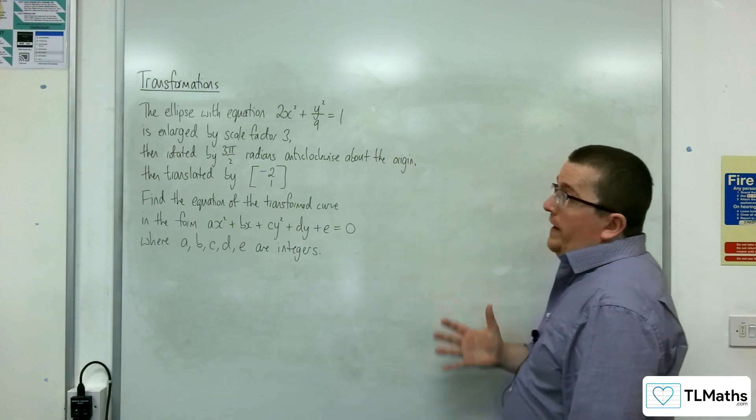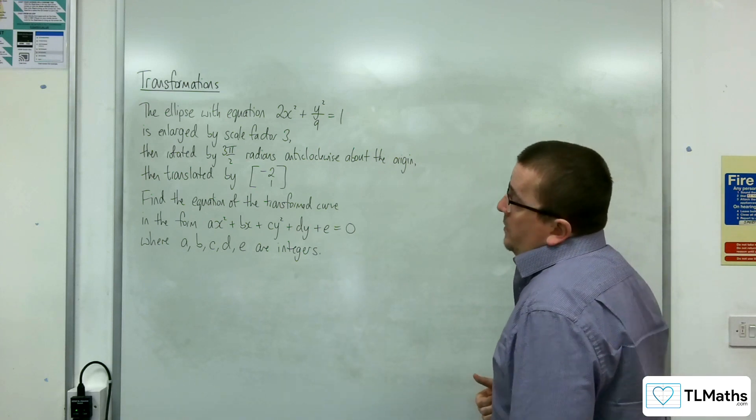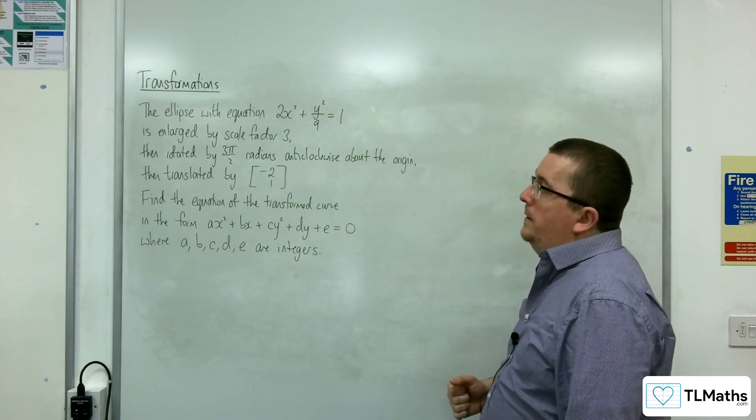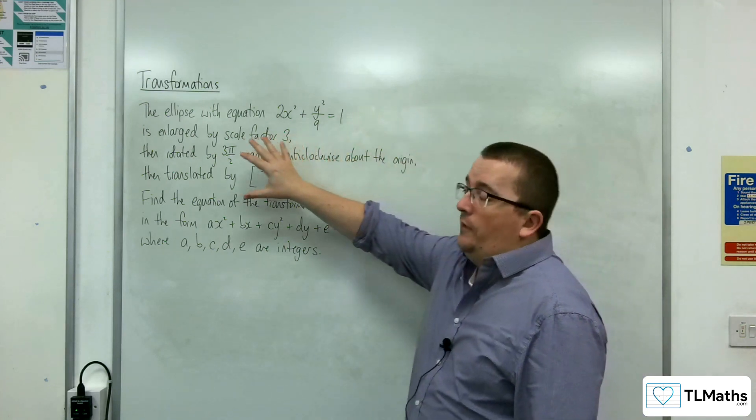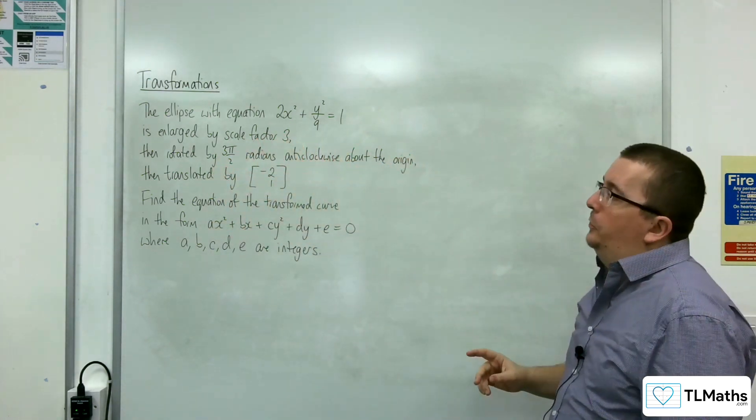In this video, we have an ellipse with equation 2x squared plus y squared over 9 equals 1. And three transformations have been applied to it.